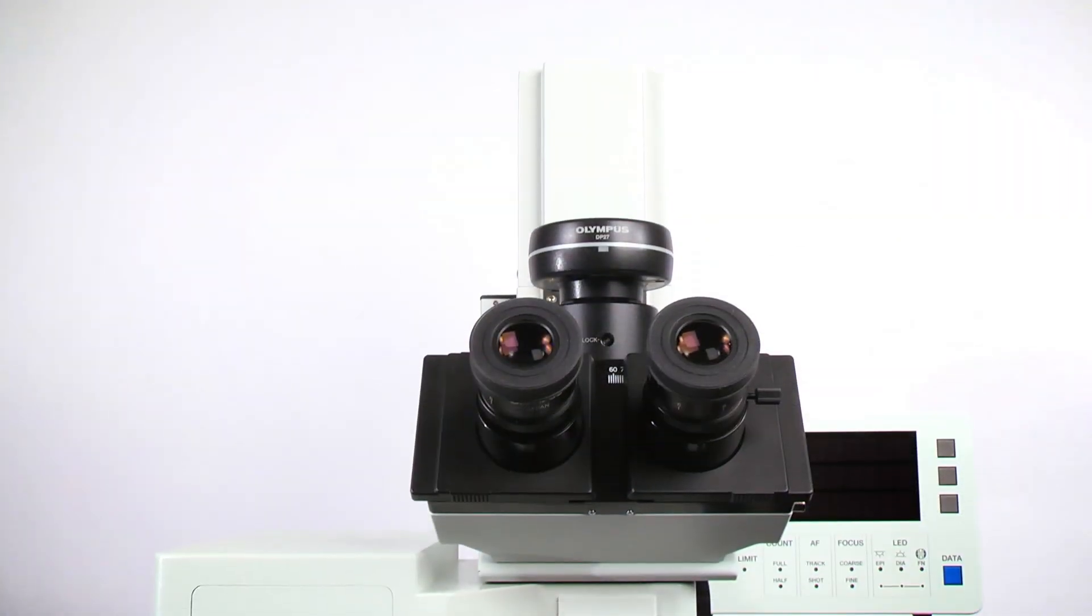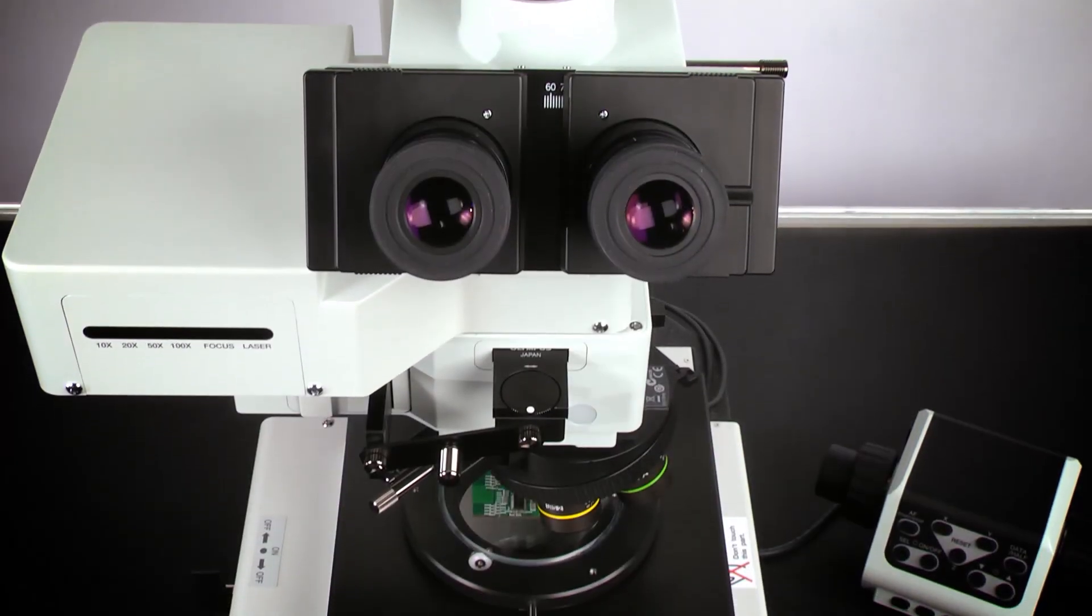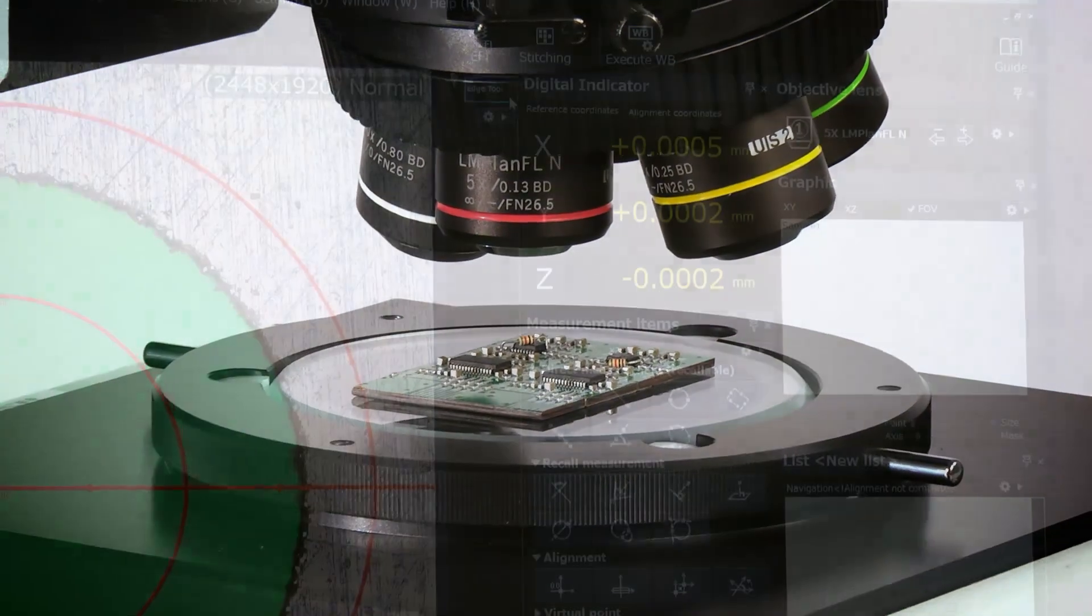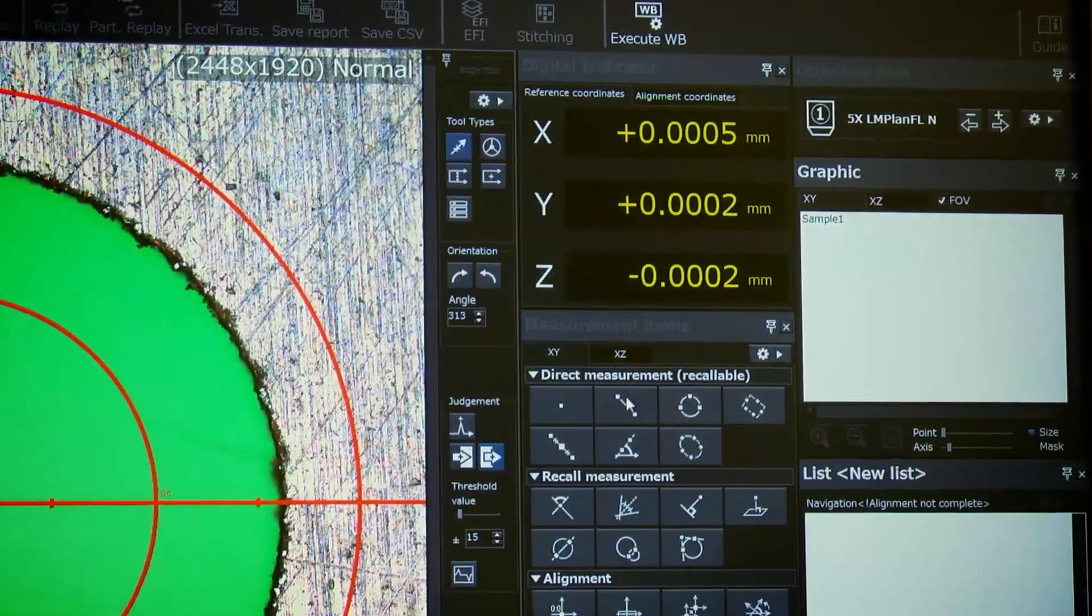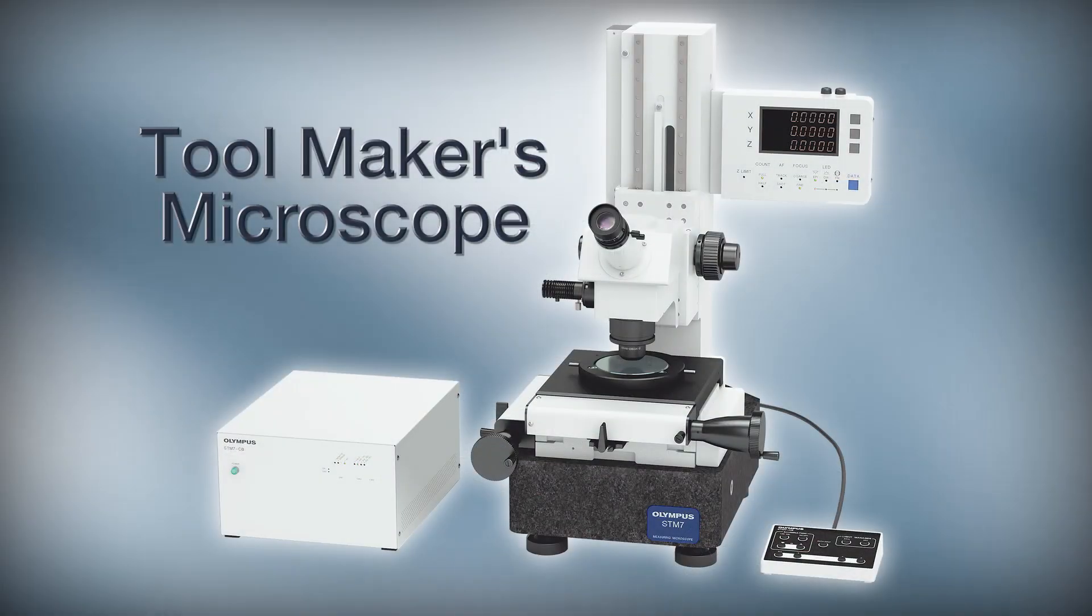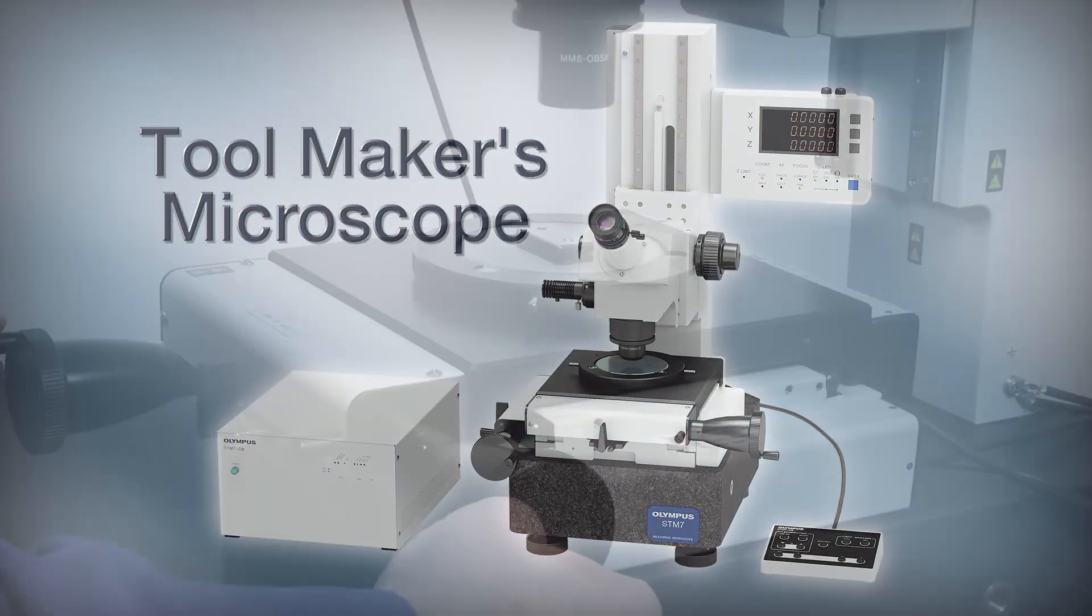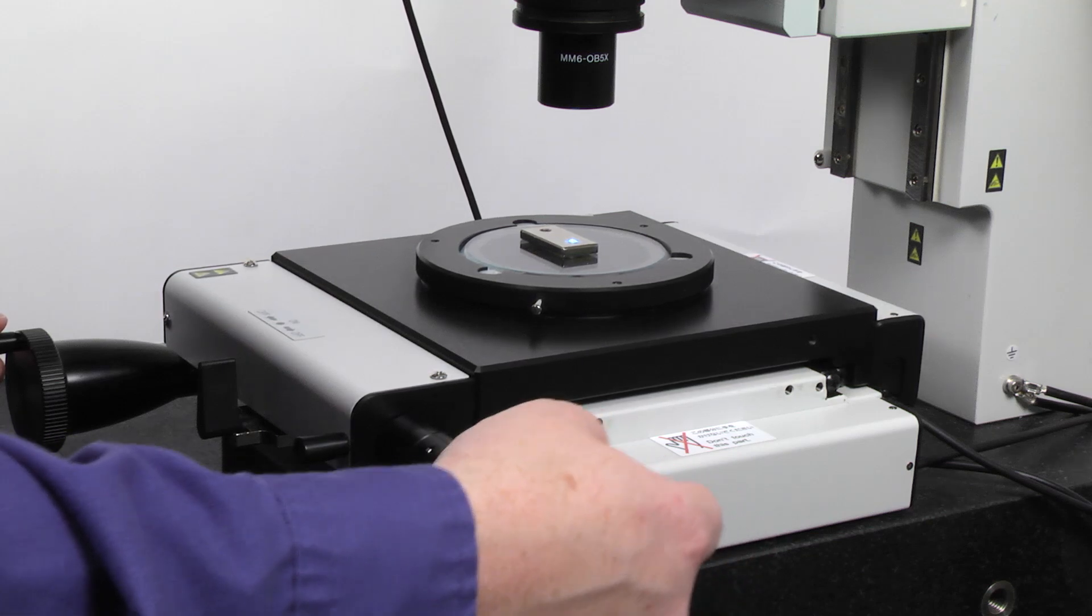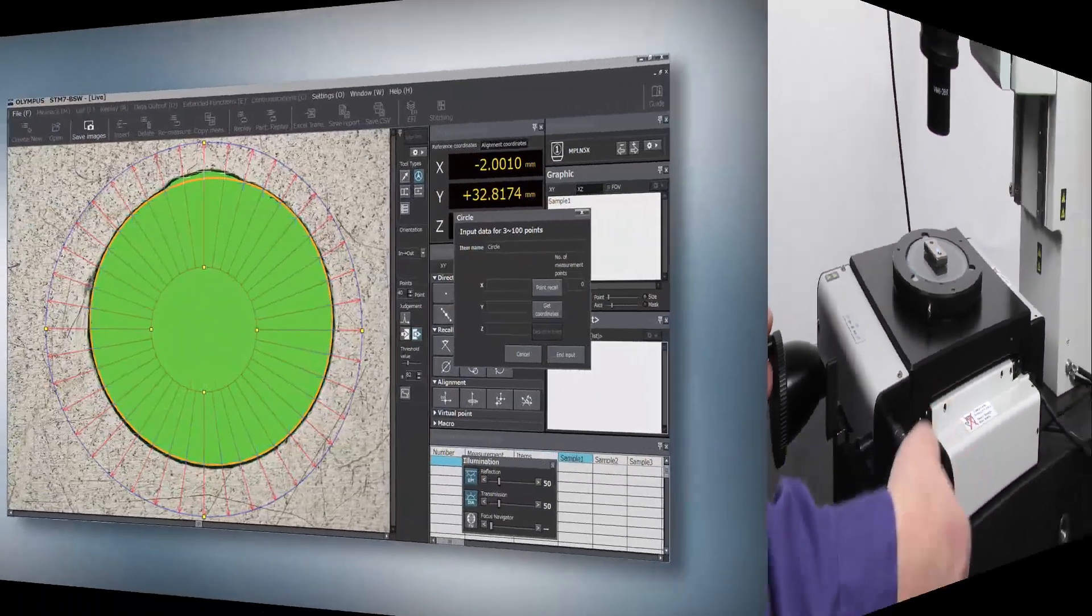The Olympus STM-7 microscope is designed for high accuracy metrology and precise measurements in material science. With a basic configuration, often known as a toolmaker's microscope, an operator can quickly take measurements to see variations in production or tooling wear.